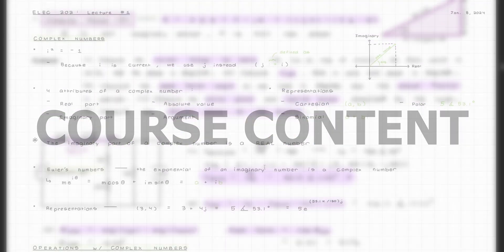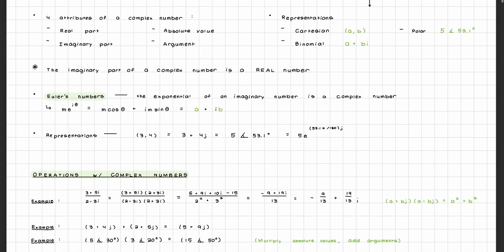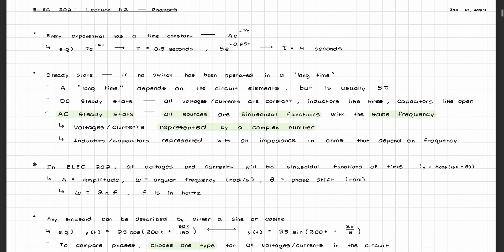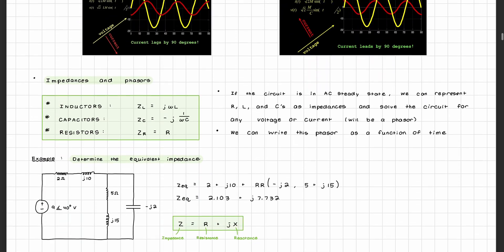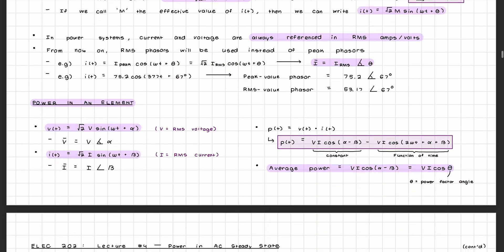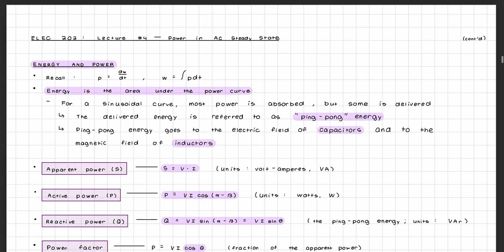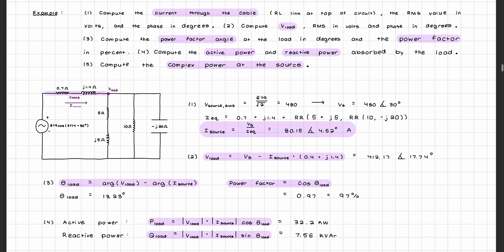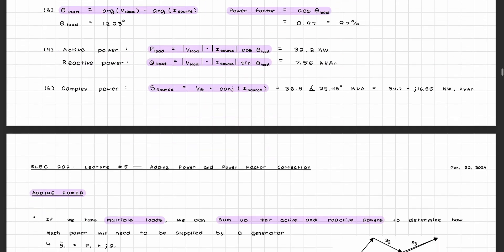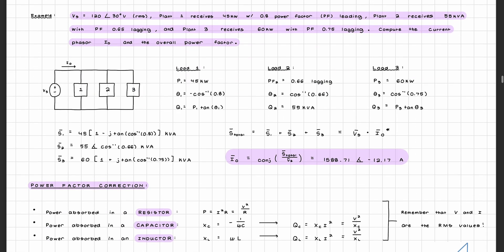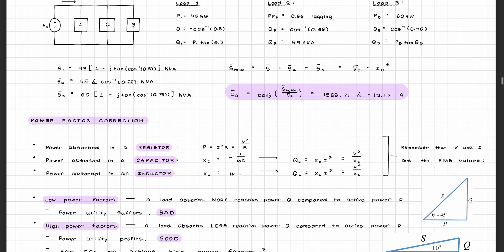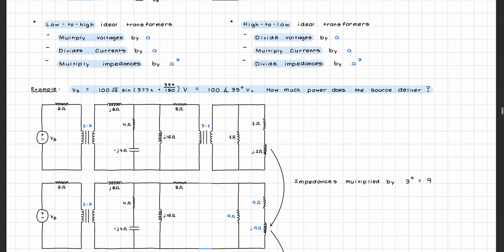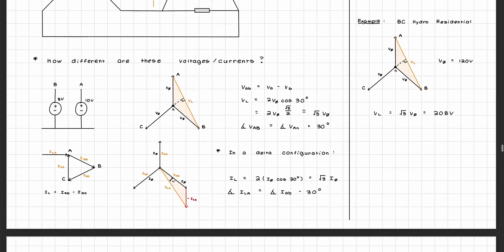Now let's get into what you're actually going to learn in ELEC 202. In the first part of the course you'll start with a short review of complex numbers before covering phasors and impedances of inductors and capacitors, and different concepts related to power in AC steady state: apparent power, active power, reactive power, power factors, complex power, the power triangle, and power factor correction. This brought us to around the first midterm exam.